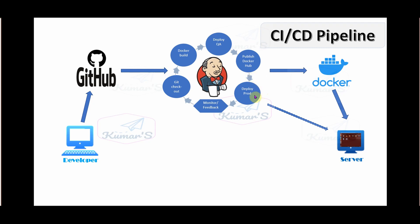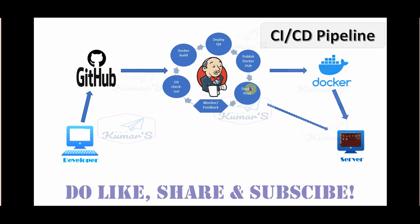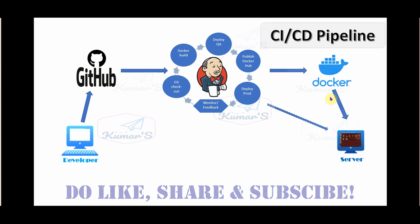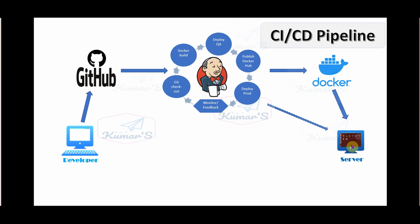Jenkins will then deploy this image to the remote server. I'm trying to mimic the whole CI/CD flow here, starting from checking out code and deploying to one of these servers. My server is running Ubuntu 20 — I will deploy the Docker build and start the image on this Ubuntu server, then access the application through the browser.